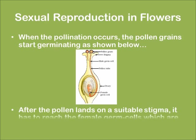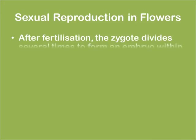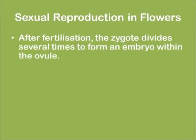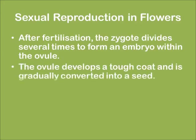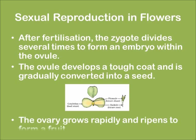After the pollen lands on a suitable stigma, it has to reach the female germ cell which is in the ovary. After fertilization, the zygote divides several times to form an embryo within the ovule. The ovule develops a tough coat and is gradually converted into a seed. The ovule then grows rapidly and ripens to form a fruit.